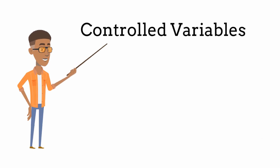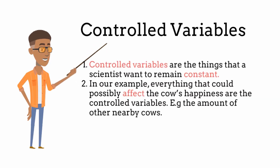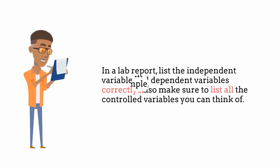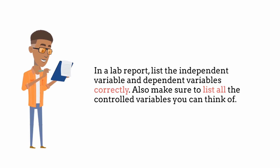The last main type are the controlled variables — things that a scientist wants to remain constant. In our example, everything that could possibly affect the cow's happiness, such as the number of nearby cows, the age of the cow, or the type of grass, are the controlled variables. They must be controlled to prevent interference with the results. When writing a lab report, make sure to list the independent and dependent variables correctly, and list all the controlled variables you can think of.